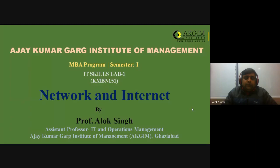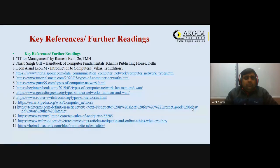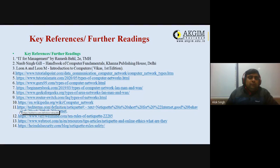The topic for today is Network and Internet, which is Topic of IT Skills Lab 1. The subject code is KMB 1.5. Today we will discuss various networking techniques, what a network is, various types of networking techniques, as well as netiquettes. For further references, you may refer to the following: the first is your textbook, and the rest are some good books and blogs. Blogs 4 to 10 are regarding networking techniques, and blogs 11 to 14 are for netiquettes.